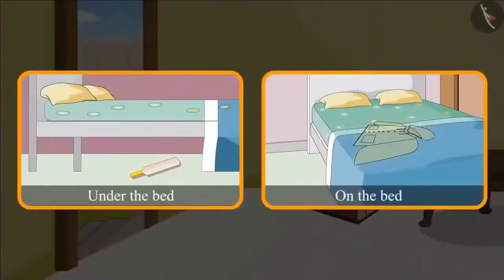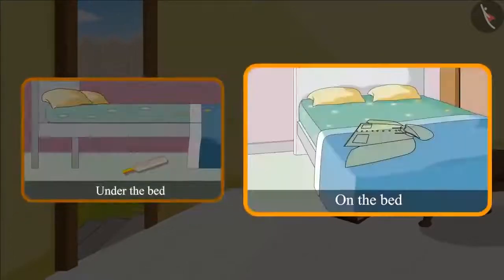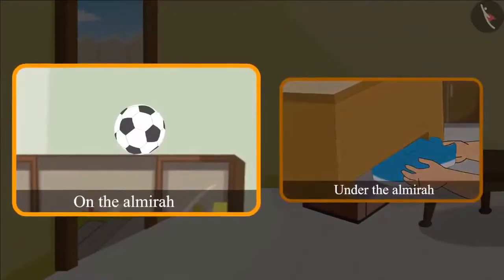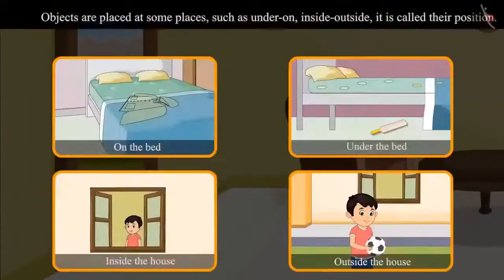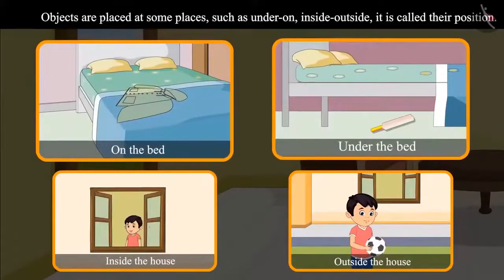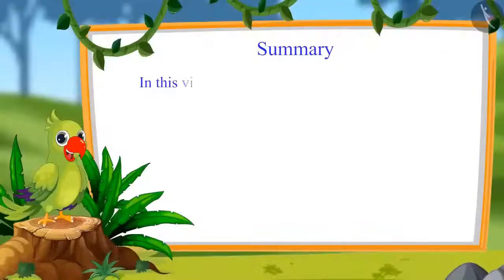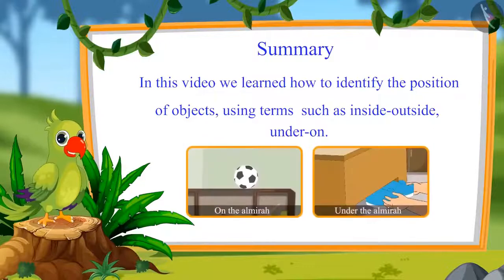Children, did you see where Chotu's bag was kept? Chotu's bag was kept under the bed and his raincoat was kept on the bed. Chotu's mother took the ball which was kept on top of the almira, and Chotu's shoes were under the almira. So, children, we have seen that objects are usually kept at certain places and words such as under, inside, and outside are used to exactly tell us their position. In this video, we learned how to identify the position of different objects using terms such as inside, outside, under, and on.